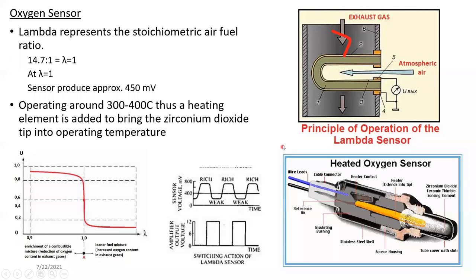This is a cutaway of the lambda sensor. The section where electricity is generated is actually made of zirconium dioxide ceramic. One side is exposed to the exhaust gas, and the inside of the zirconium dioxide component is actually open to the atmospheric air. Since it is in contact with atmospheric air and the exhaust gas, based on the variation of oxygen between atmospheric air and exhaust gas, it creates a small voltage between 0 to 800 millivolts.